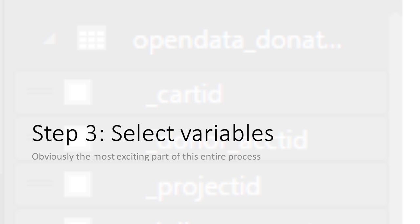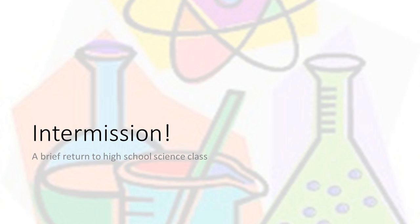Having defined exactly what you want to pull in, the next step is to choose your variables — which sounds simple but is actually important. To see why, let's take a brief break and go into Power BI so you can see what some of this actually looks like. I'm sharing my screen now.